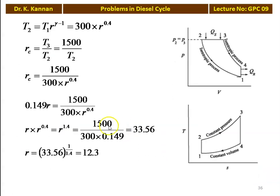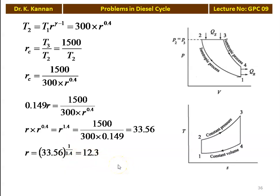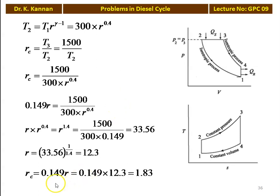Setting the two expressions equal: 0.149·R equals 1500 divided by (300 into R to the power 0.4). Cross-multiplying: R into R to the power 1.4 equals R to the power 1.4 equals 1500 divided by (300 into 0.149) equals 33.56. Therefore R equals 33.56 to the power (1/1.4) equals 12.3. The compression ratio for the Diesel cycle is 12.3 and the cutoff ratio Rc equals 0.149 into 12.3 equals 1.83.